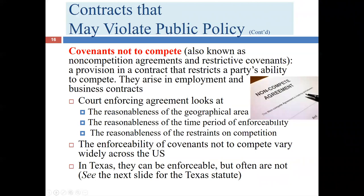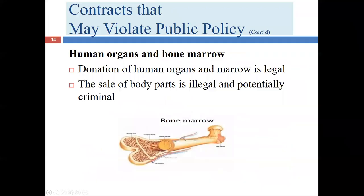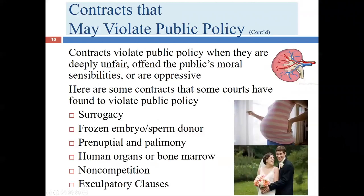Now we're up to covenants not to compete. To recap: surrogacy is legal but regulated in Texas; frozen embryos and sperm donations are legal and regulated; prenuptial agreements are legal and regulated; palimony is generally not legal; and human organs and bone marrow are generally not legal to sell. We have two remaining categories: non-competes and exculpatory clauses.